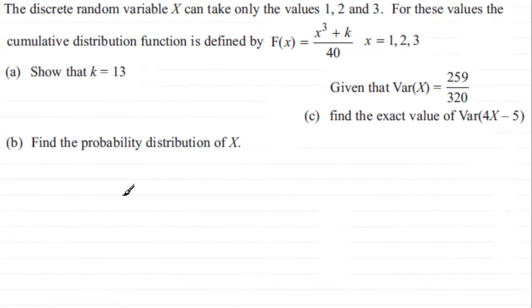Hi. Here we have an example on discrete random variables that you might like to try. We've got the discrete random variable X can only take the values 1, 2, and 3. And for these values the cumulative distribution function is defined by F(x) which equals x cubed plus k all divided by 40 for values of x equaling 1, 2, and 3.